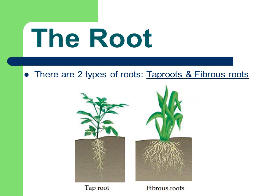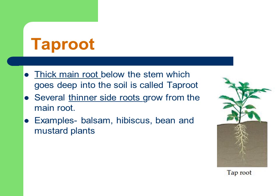Now there are two types of roots: tap roots and fibrous roots. Tap root: a thick main root below the stem which goes deep into the soil is called a tap root. There are several thinner side roots that grow from the main root. Examples: balsam, hibiscus, bean and mustard plants. In this diagram you can see below the stem there is a long root going into the soil, with small thinner side roots. The main root is thick. So this type of root is known as tap root.